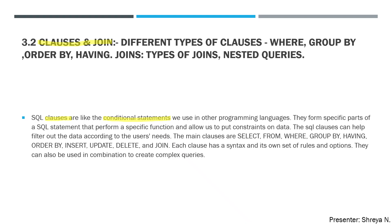For example, the condition we write — SELECT * FROM table_name WHERE condition — here WHERE is a clause that specifies the condition. So it filters the data and gives you only the relevant data, not unnecessary data. The main clauses are: SELECT, FROM, WHERE, GROUP BY, ORDER BY, INSERT, UPDATE, DELETE, and JOIN.